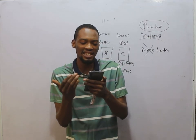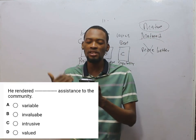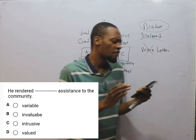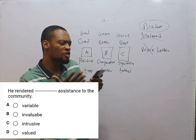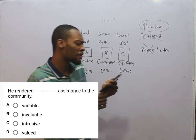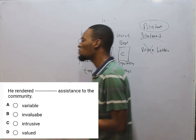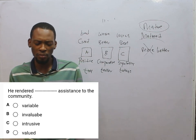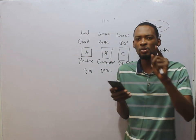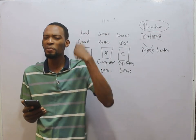He rendered dash assistance to the community. The options are variable, invaluable, intrusive, and valued. Variable is wrong, intrusive is wrong. Choosing between invaluable and valued — the correct answer is invaluable. Invaluable means very, very valuable, like priceless, very important. So he rendered invaluable assistance to the community. Note: invaluable does not mean useless or unimportant — it means very important service.